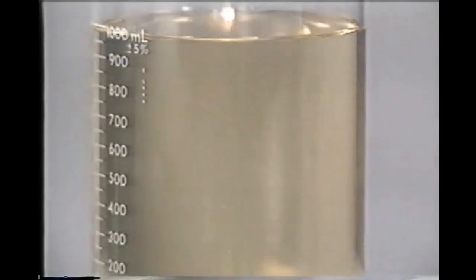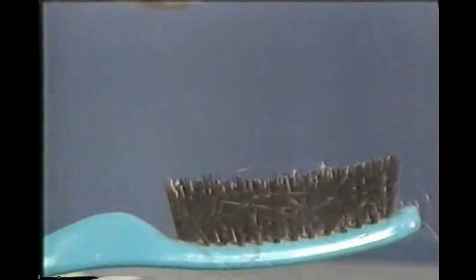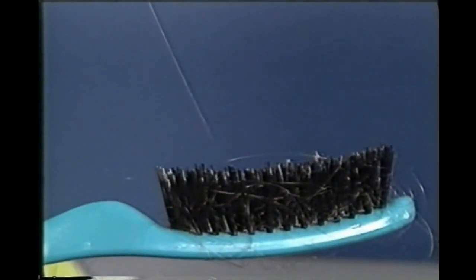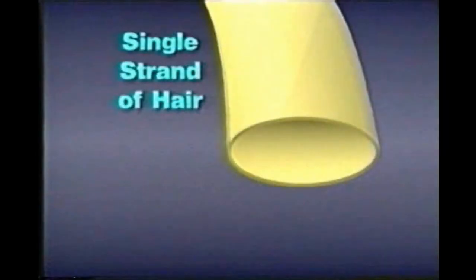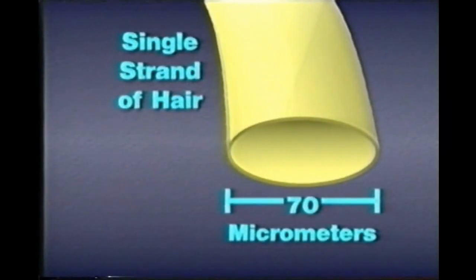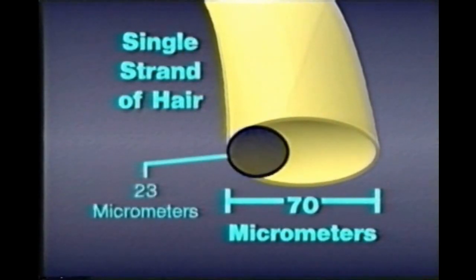Hydraulic fluid clean enough for modern hydraulic systems must have no particles larger than about one-third the diameter of a human hair. The end of this shaft of hair, which is about 70 microns, or 70 millionths of a meter across, is three times as large as the acceptable size for particles in hydraulic fluid. In some systems, even that would be too big.